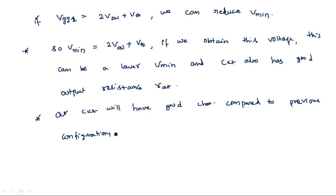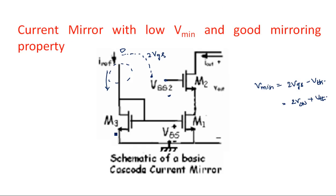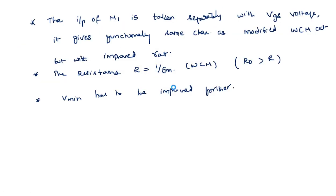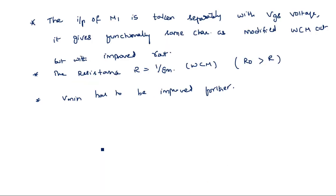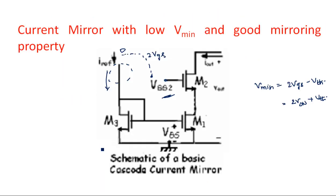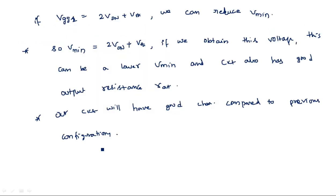What we need to understand is that if we apply a constant voltage to the transistors like VGG2 — as opposed to the simple VGS used in the previous case — then our circuit will have good current mirroring property, meaning low Vmin and high output impedance. This is what makes good current sources and sinks. Thank you.